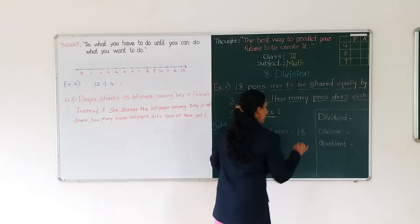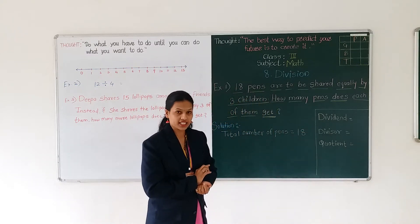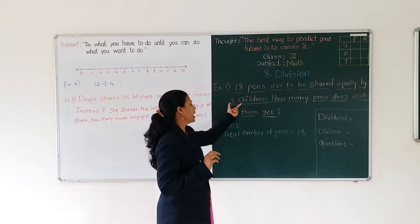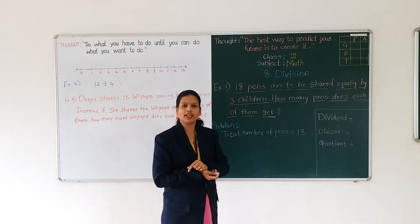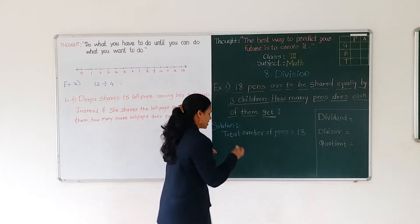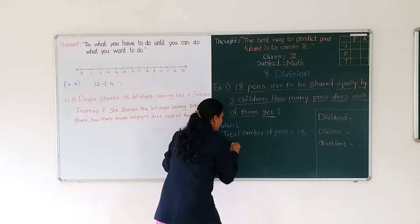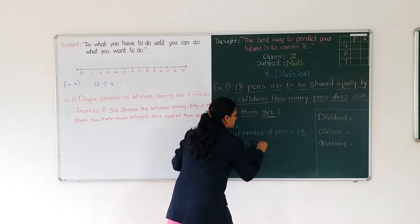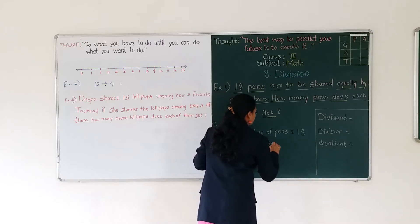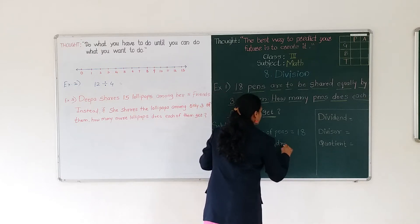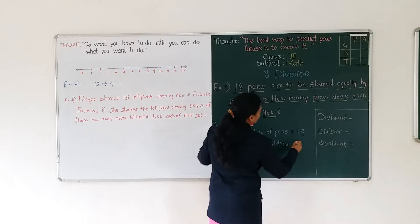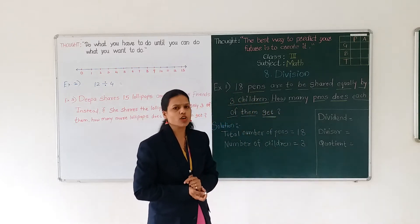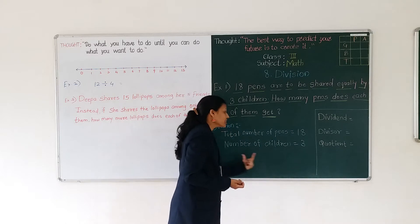And these 18 fans we have to share equally among how many children? 3 children. Number of children is 3. So how can you write the division statement?